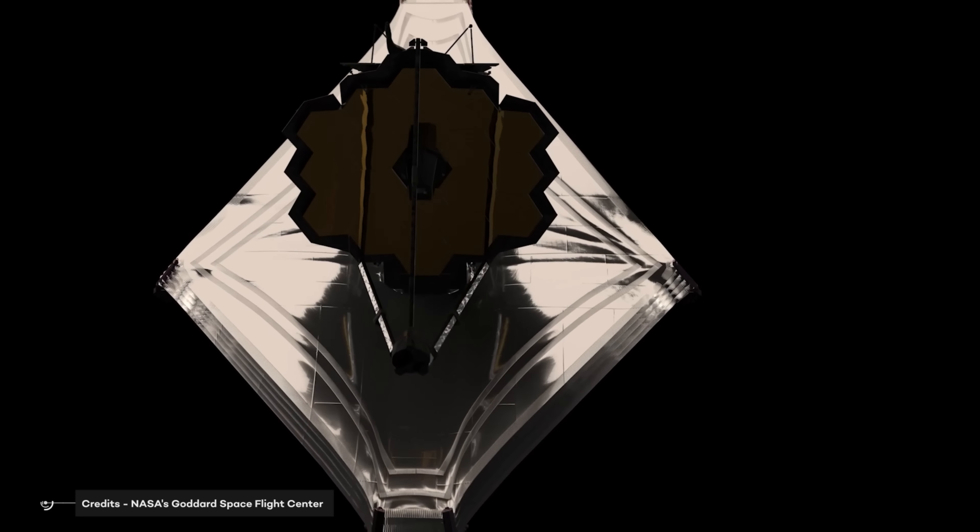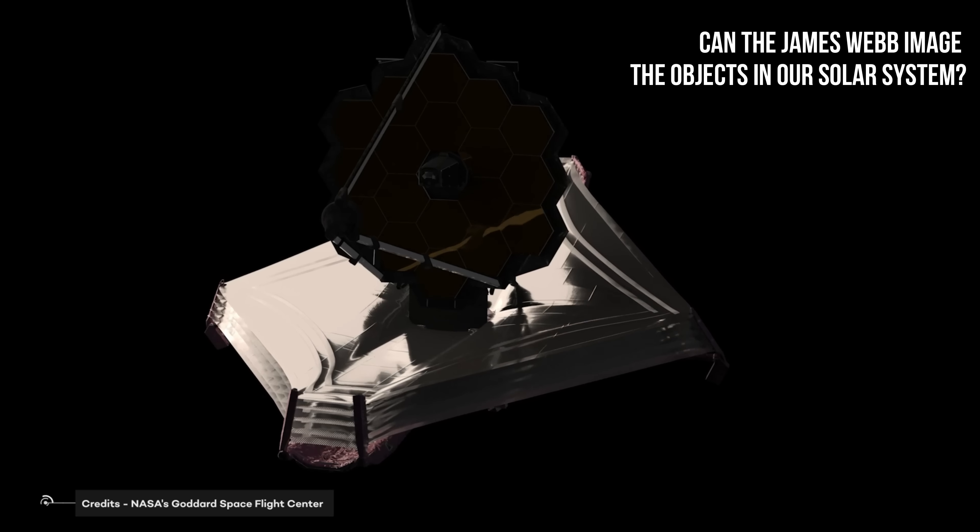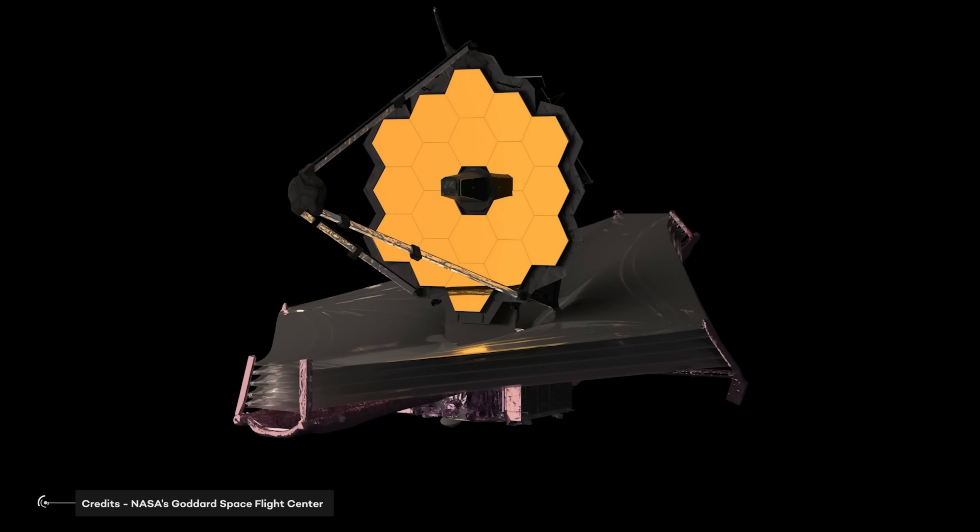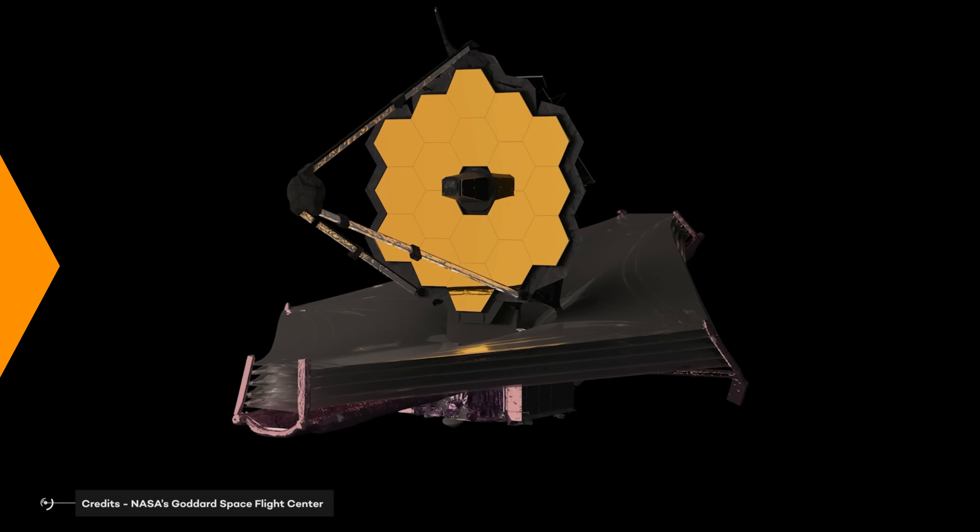And what about the solar system? Can the James Webb image the objects in our solar system? Let's understand how the James Webb can track solar system objects in this video.